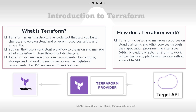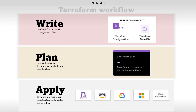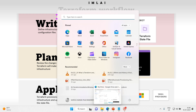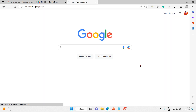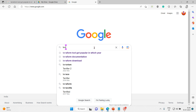Let's look into the Terraform workflow. HashiCorp and the Terraform community have already written thousands of providers to manage many different types of resources and services. You can find all publicly available providers on the Terraform Registry, including Amazon Web Services, Azure, Google Cloud Platform, Kubernetes, Helm, GitHub, Splunk, Datadog, and many more.